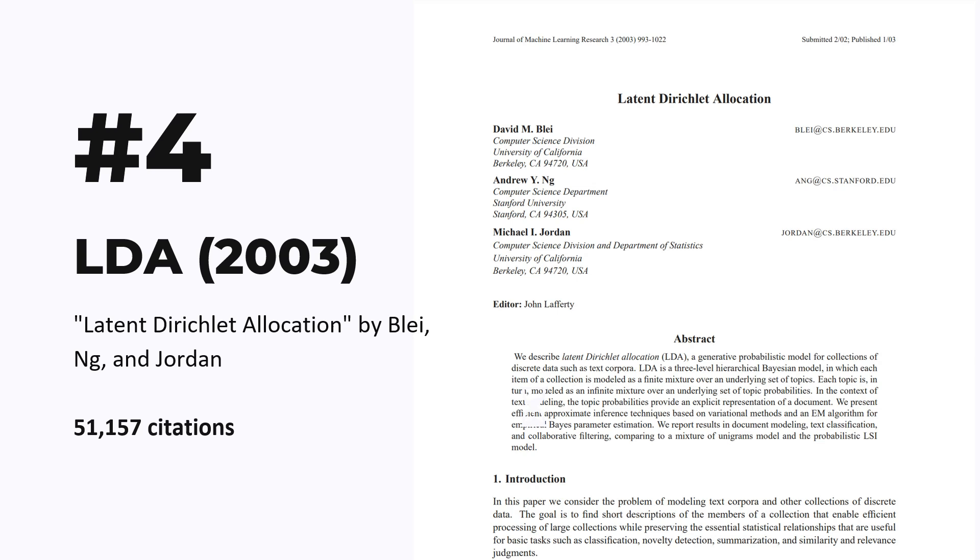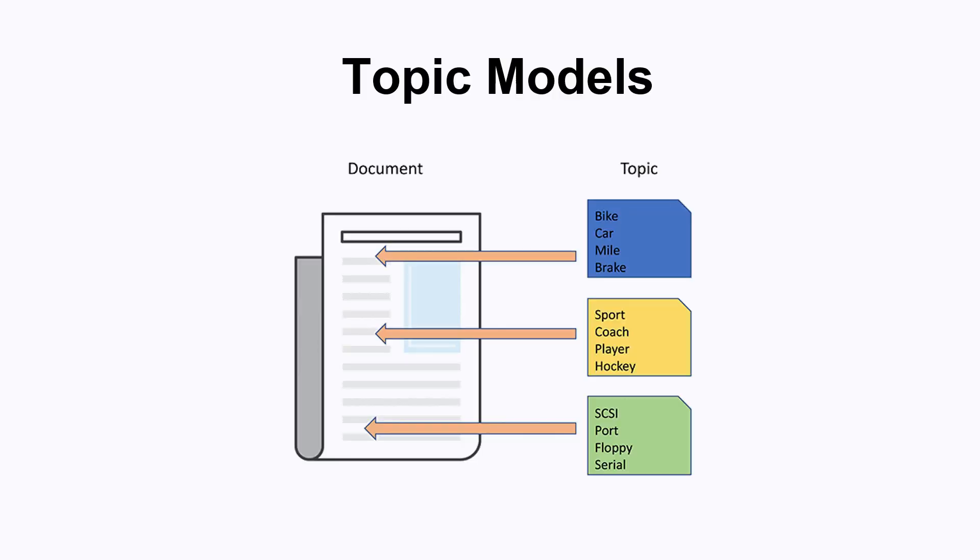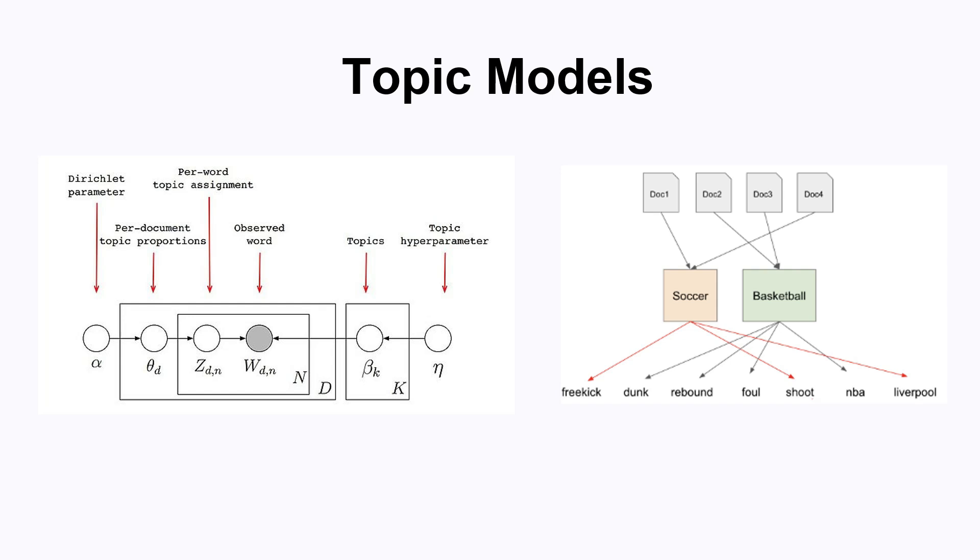Jumping to number four, we have a fairly old paper published in 2003 called Latent Dirichlet Allocation, or LDA for short. LDA is the algorithm that you use to train topic models. A topic model is what you will use if you have a bunch of documents and you want to know what topics they're discussing. This can be really useful in fields like social sciences or marketing research. The LDA model breaks down each document into a mixture of topics and breaks down each topic into a mixture of words.